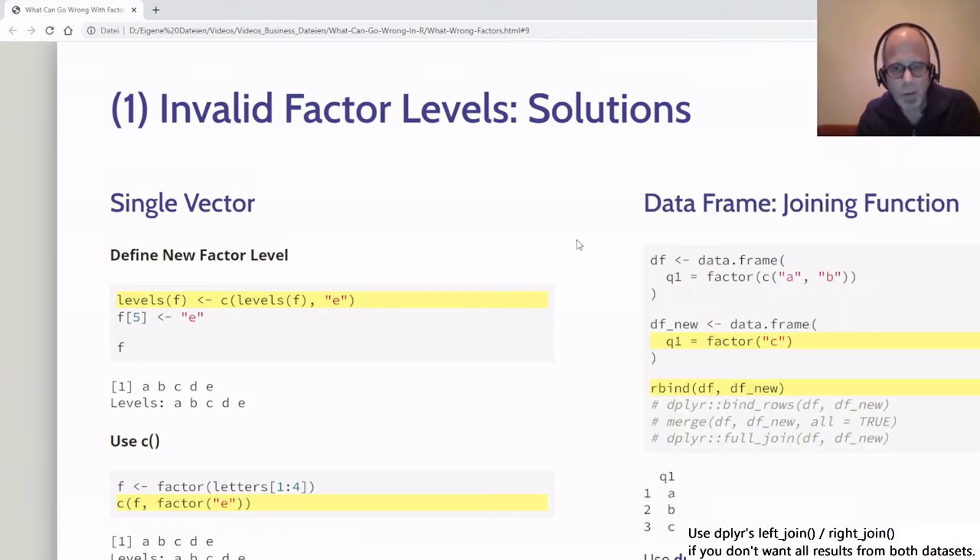For the data frame case there are several solutions we can use. I kept it simpler here, not using the Likert scale, just using entries A and B for the existing data df, then adding a new data frame df_new with one variable question_one containing a factor with entry C. If I want to get valid data without manually fiddling with factor levels, I can use the rbind function to bind rows—to add a row to my data set df and df_new. That gives me this result—a factor with three factor levels A, B, C as expected.